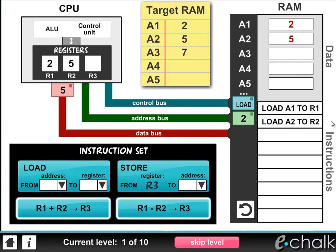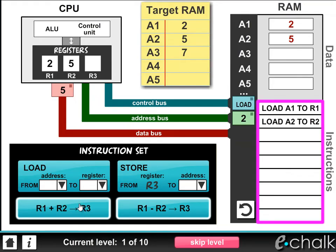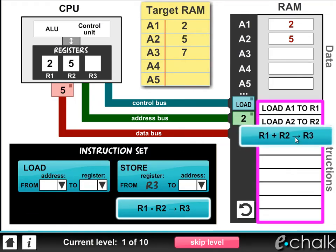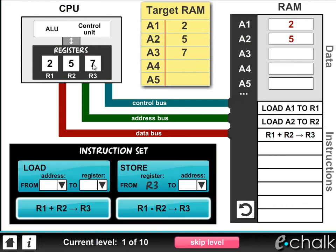Now we have some data in the registers, the ALU is able to operate on it. Remember, the ALU performs arithmetic and logic operations on data in the registers. So we can now issue this command, which instructs the ALU to add the contents of register 1 to register 2 and store the result in register 3. So now when we drag the instruction onto the instruction stack, we can see it getting executed and we end up with a 7 in register 3.